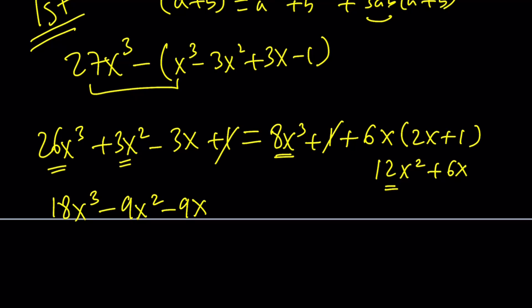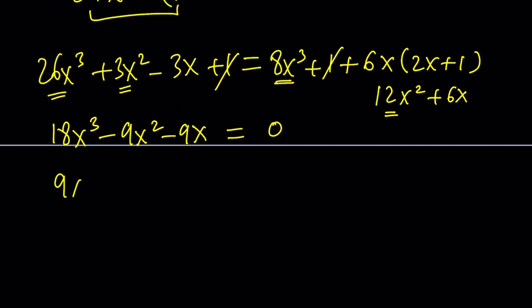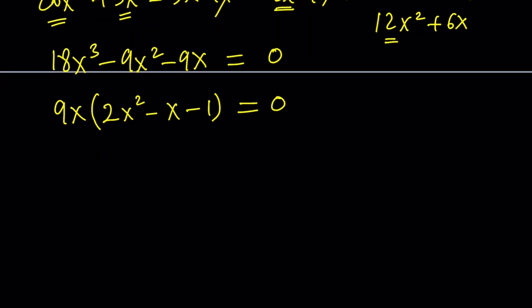No constants, so we can just solve this easily. Now we can factor out a 9x, and that gives us 2x squared minus x minus 1 equals 0.